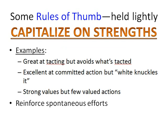For this slide, it's important to capitalize on what strengths and abilities the client already has. For example, some clients are great at tacting — that's just a geeky behaviorist term for putting names or labels to their experience. What this means is that some clients are excellent at being able to discriminate among thoughts and bodily sensations. The problem is that they tend to avoid what they discriminate.